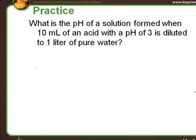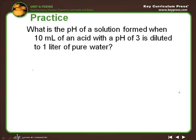The question says, what is the pH of a solution formed when 10 milliliters of an acid with a pH of 3 is diluted to 1 liter of pure water? The first question is, if it is diluted, what's going to happen to the pH?